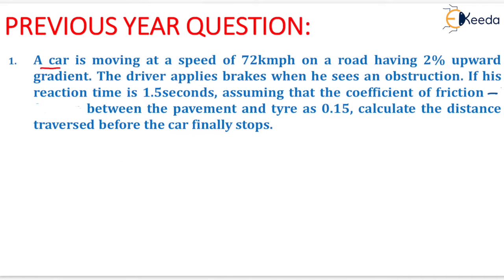Question is given as: a car is moving at a speed of 72 km per hour on a road having 2% upward gradient.